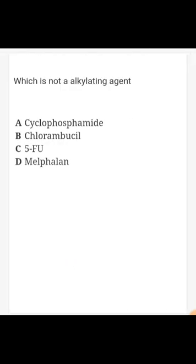Next question: which of the following is not an alkylating agent? Options are cyclophosphamide, chlorambucil, 5-fluorouracil, and melphalan. The answer is 5-fluorouracil, because 5-fluorouracil is an antimetabolite — specifically an anti-pyrimidine compound — and not an alkylating agent.